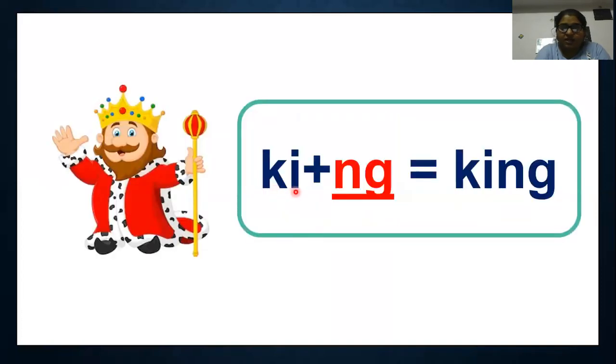K, I, kee, right children? ng, king. Kee, ng, king.